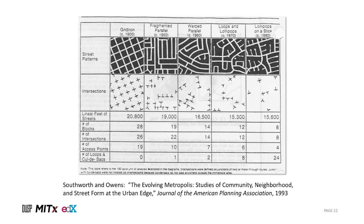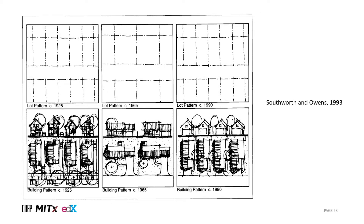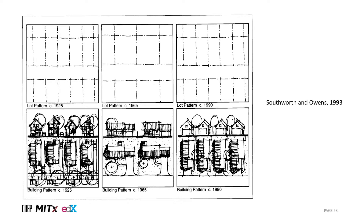As diagrams from the work of Michael Southworth and Peter Owens show, patterns of street layouts at the urban edge evolved considerably during the 20th century. Earlier grids, fragmented parallels, and warped parallels gave way to more curvilinear layouts with loops and lollipop-like cul-de-sacs. The newer models that gained favor starting in the 1960s, oriented to car travel, had increasingly fewer intersections or amenities for pedestrians. Sidewalks disappeared, and the streetscape became dominated by driveways and gaping garage entrances.